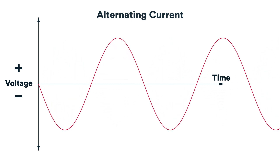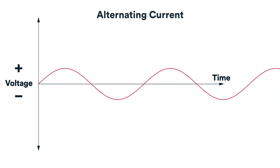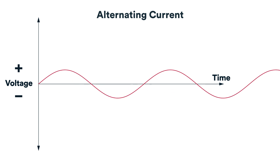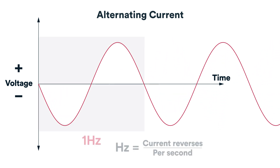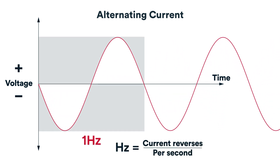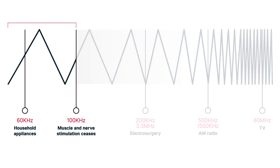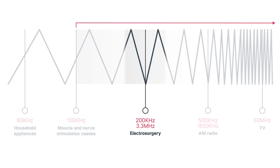The generator uses alternating current, which oscillates back and forth hundreds of thousands of times per second. Alternating current is measured in hertz, or the number of cycles per second. Electrical nerve and muscle stimulation occurs with currents alternating below 100 kilohertz. With monopolar electrosurgery, the current operates at well above 100 kilohertz, resulting in zero nerve or muscle stimulation.